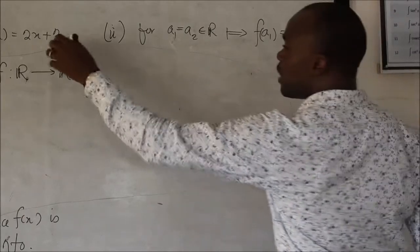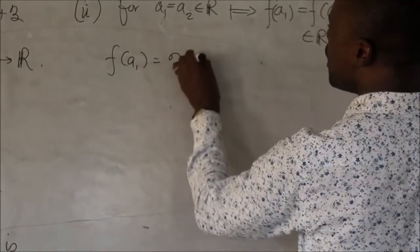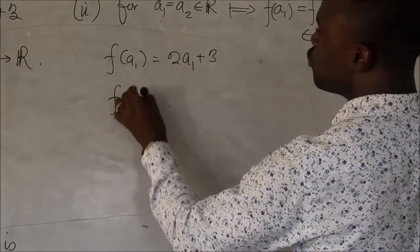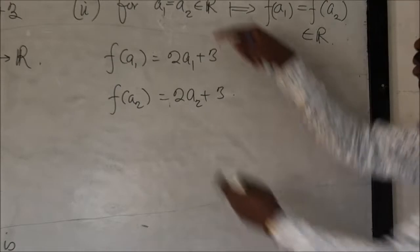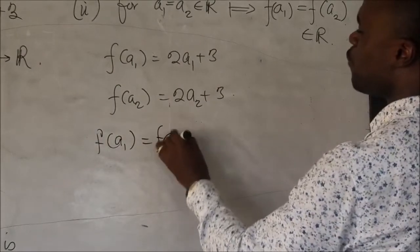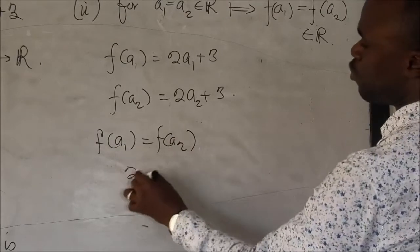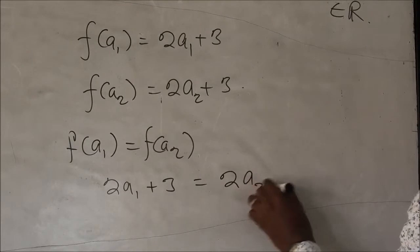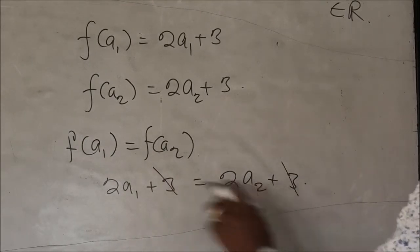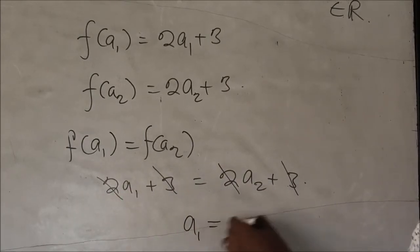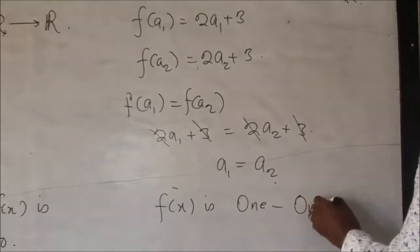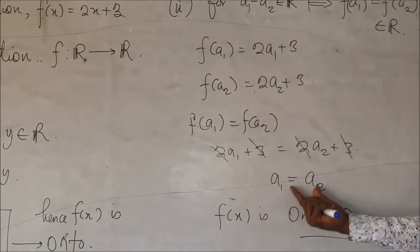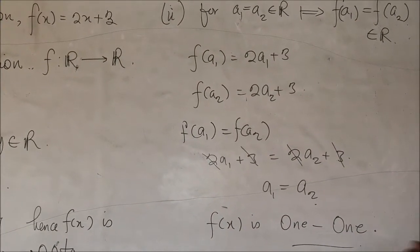So, how do we prove that? We simply find F of a1. That is going to give us 2a1 plus 3. Now, for we to show that it is one-to-one, we must equate this. So, F of a1 equals to F of a2. And we see that that will be 2a1 plus 3 will be equals to 2a2 plus 3. You obviously know that this can cancel this. And if we equate this two, 2 will also cancel 2. So, we have a1 equals to a2. By this, we have shown that F of x is one-to-one. So, this is how we show that the function is one-to-one. You can see by equating these two, we see that this is the same. We have shown that the function is one-to-one. That is injective.